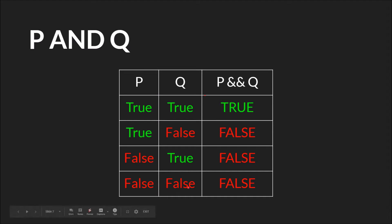Obviously, if both of them are false, then P and Q is false. But also, if any one of them is false, then they're both not true.